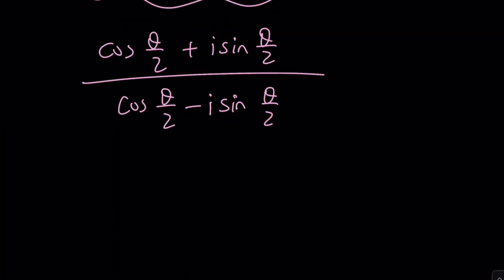Anyways, so here's what we can do. When you divide a complex number by another complex number, you subtract the arguments. Is that really true? Yes. So if you're dividing, think about it. This is e to the power i theta over 2. And this is e to the power negative i theta over 2.